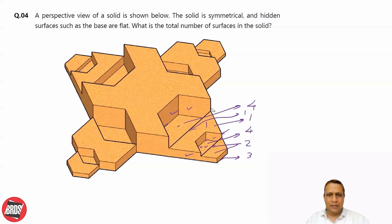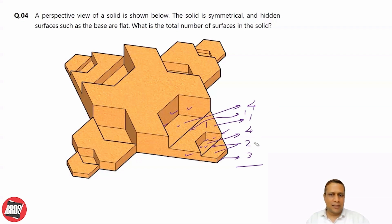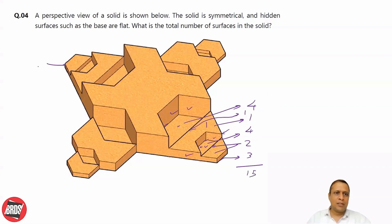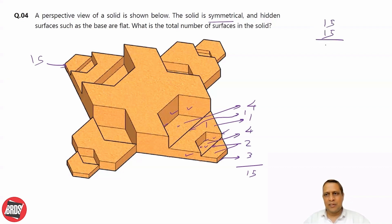Considering this part, how many surfaces are there? 4, 5, 6 and 4, 10, 11, 12 and 13, 15 — so 15 surfaces here. Similarly, 15 surfaces on the other side because it's a symmetrical solid. So 15 plus 15, we have got 30.